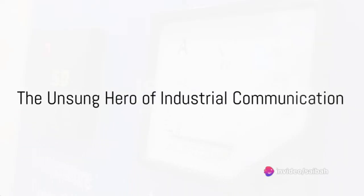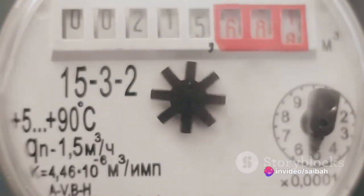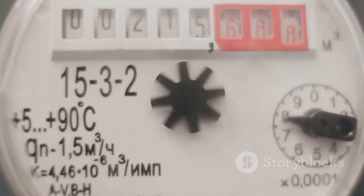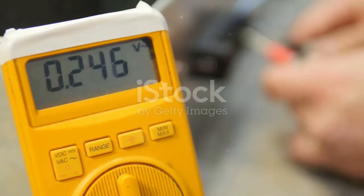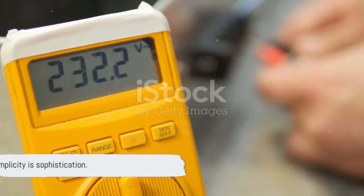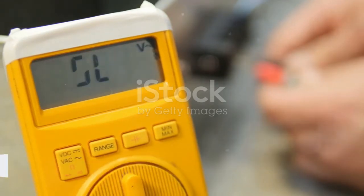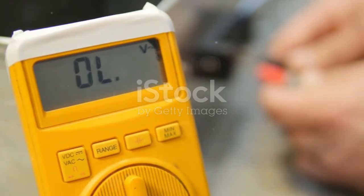From the silent whispers of temperature sensors to the rhythmic pulses of flow meters, the 4 to 20 mA current loop is an unsung hero in the world of industrial communication. It's a testament to the adage that sometimes, simplicity truly is the ultimate sophistication.